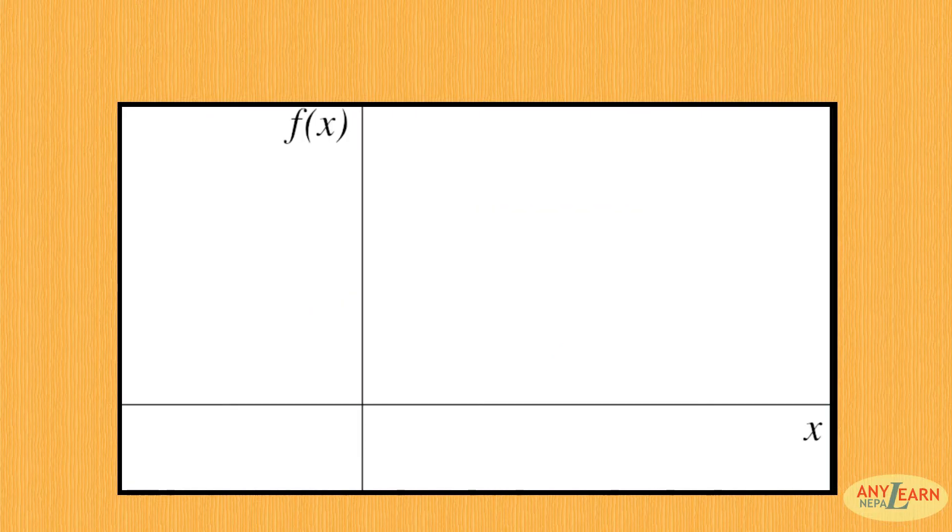Let's understand this process using the graphical method. Suppose this is a graph of function f(x). We can clearly see the position of the root, which is the value of x at which the curve crosses the x-axis.